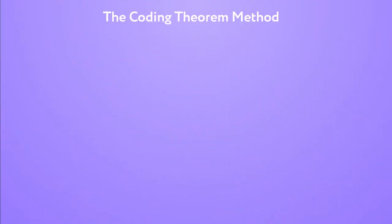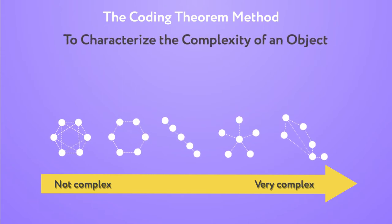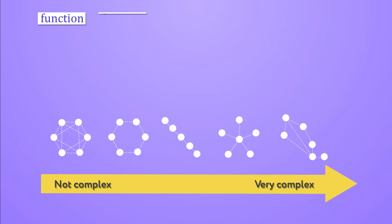The coding theorem method, based on the work of Kolmogorov and Chaitin, is a method that we've introduced in order to characterize the complexity of an object based on these universal algorithmic measures.